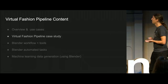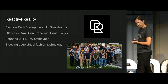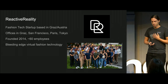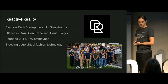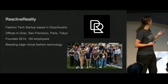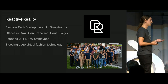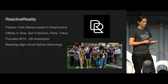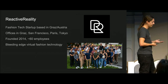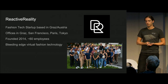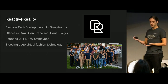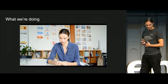That brings me to the virtual fashion pipeline we have established at our company, Reactive Reality. We are a fashion tech startup based in Graz, Austria, with offices in Graz, San Francisco, Paris, and Tokyo, founded in 2014 with around 60 employees. We are working with bleeding-edge fashion technology, using a lot of artificial intelligence and machine learning to enable the creation of virtual fashion at scale. This means a fashion brand can approach us and say they have a collection of 10,000 individual items and need optimized 3D models as soon as possible — and we say yes, we can do that. Here is a short video about what we are doing.